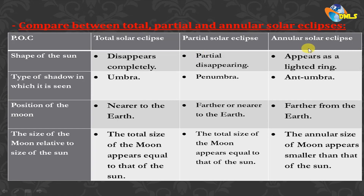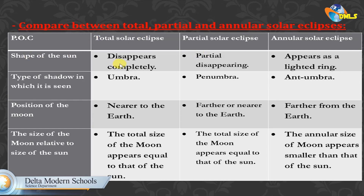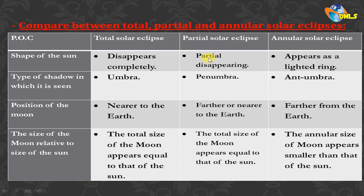Now we compare the total, partial, and annular solar eclipse according to the shape of the sun: in the total eclipse, the sun disappears completely; in the partial eclipse, part of the sun is visible; in the annular eclipse, the sun appears as a glowing ring. The type of shadow: total corresponds to the umbra, partial corresponds to the penumbra, and annular corresponds to the antumbra. The position of the moon: near to the Earth for total, near or somewhat farther for partial, and far away from the Earth for annular.